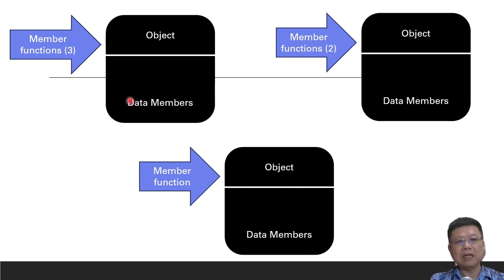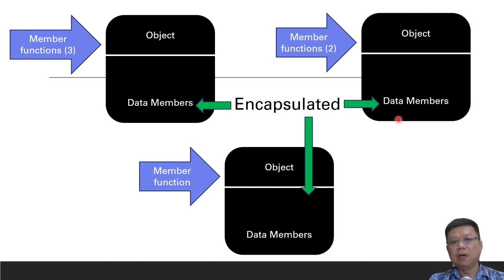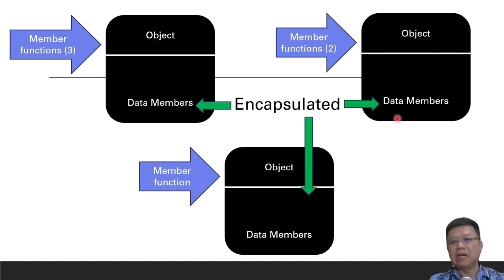This will create three objects, each with their own data members and their own member functions. You will find that these data members are actually encapsulated based on the object itself. So if you have the same variable name, like integer student number, in different objects, the compiler will not be confused.